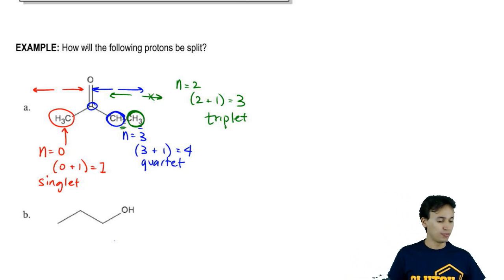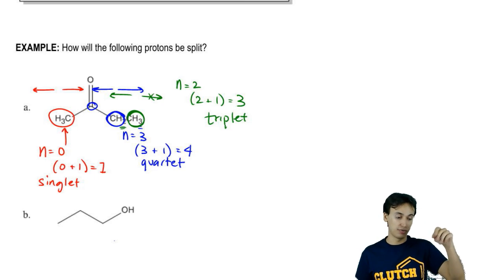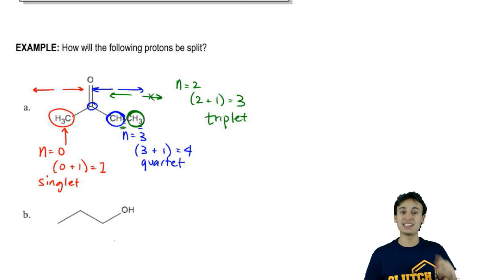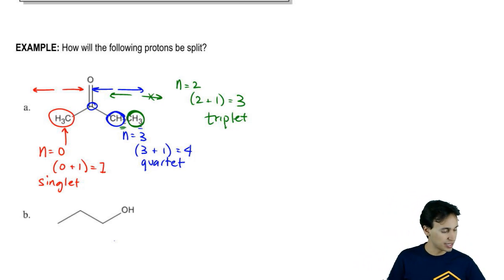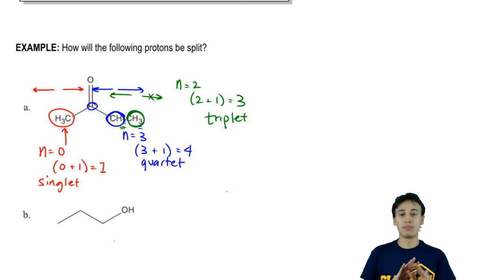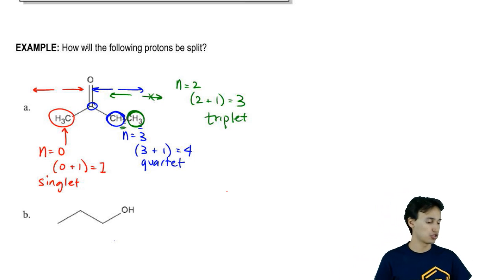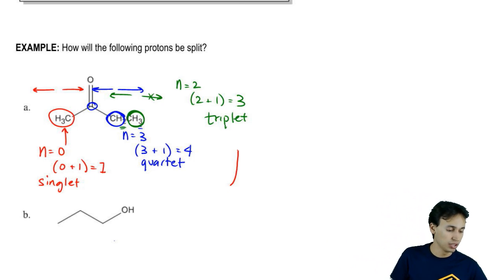Now on top of that, if you wanted to predict the shapes of these singlets, quartets, triplets, it's easy because you could just use Pascal's triangle. So you could say that a singlet – by the way, I'm not drawing these in any particular order. I'm not drawing chemical shifts here. I'm just drawing shapes. The singlet would look like this.